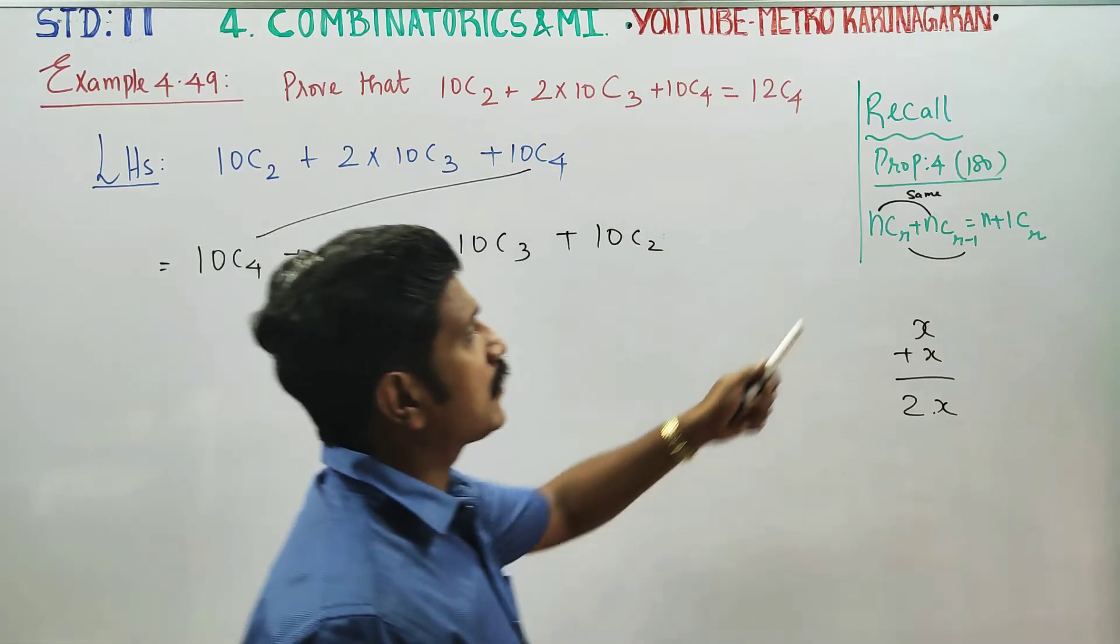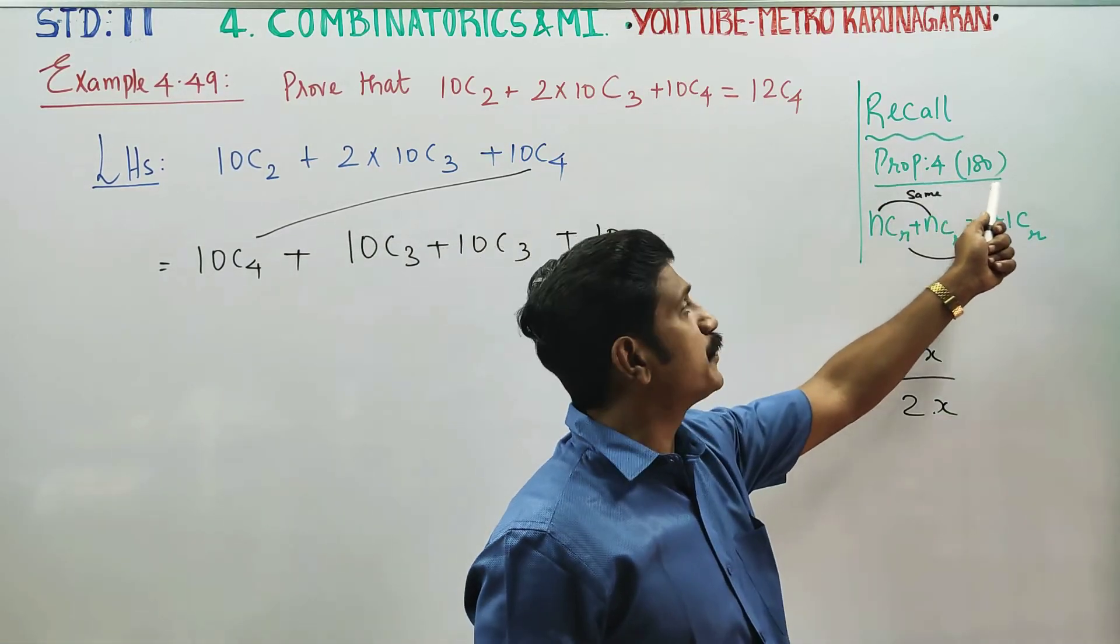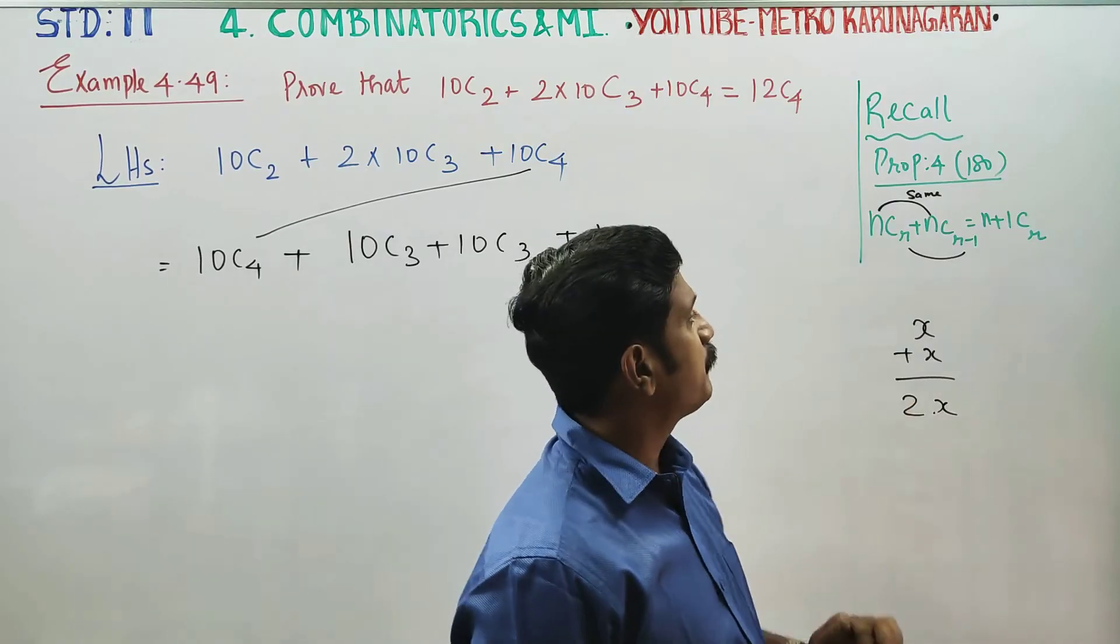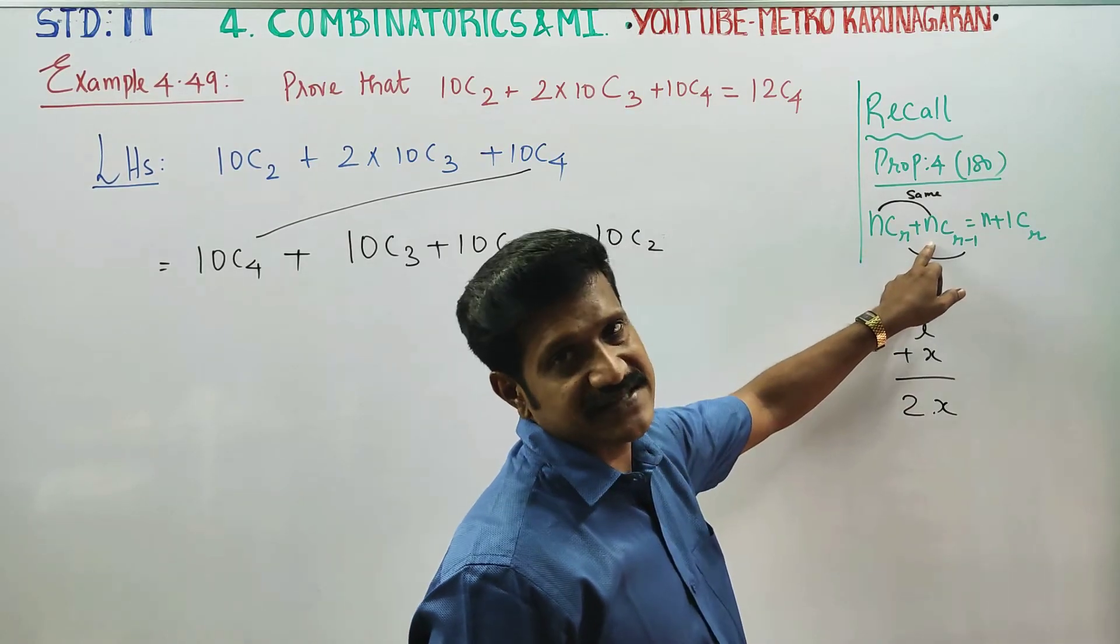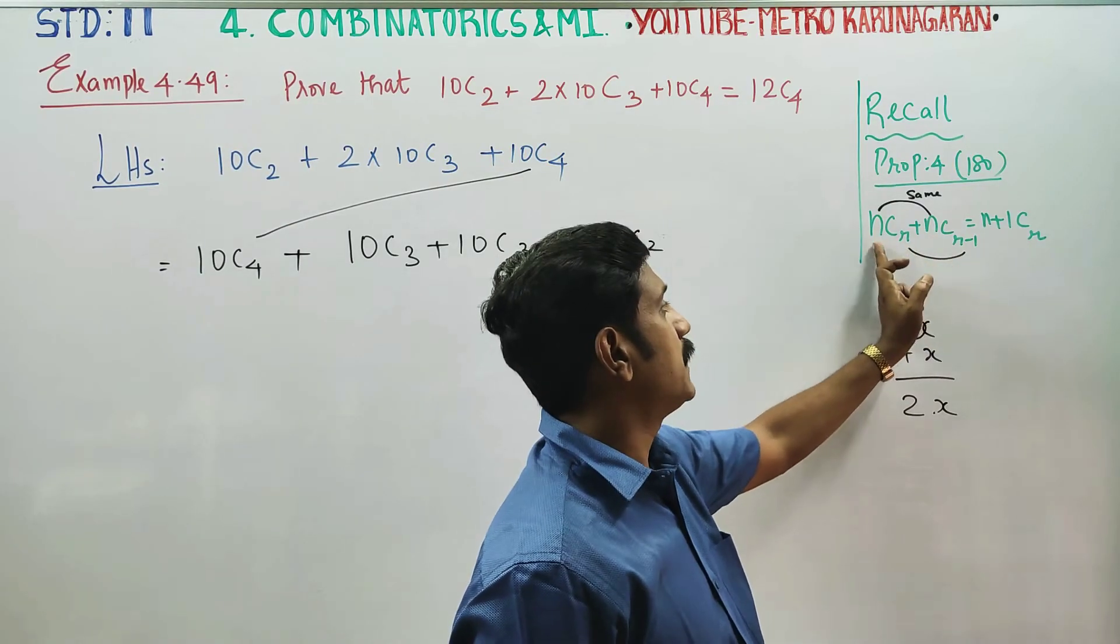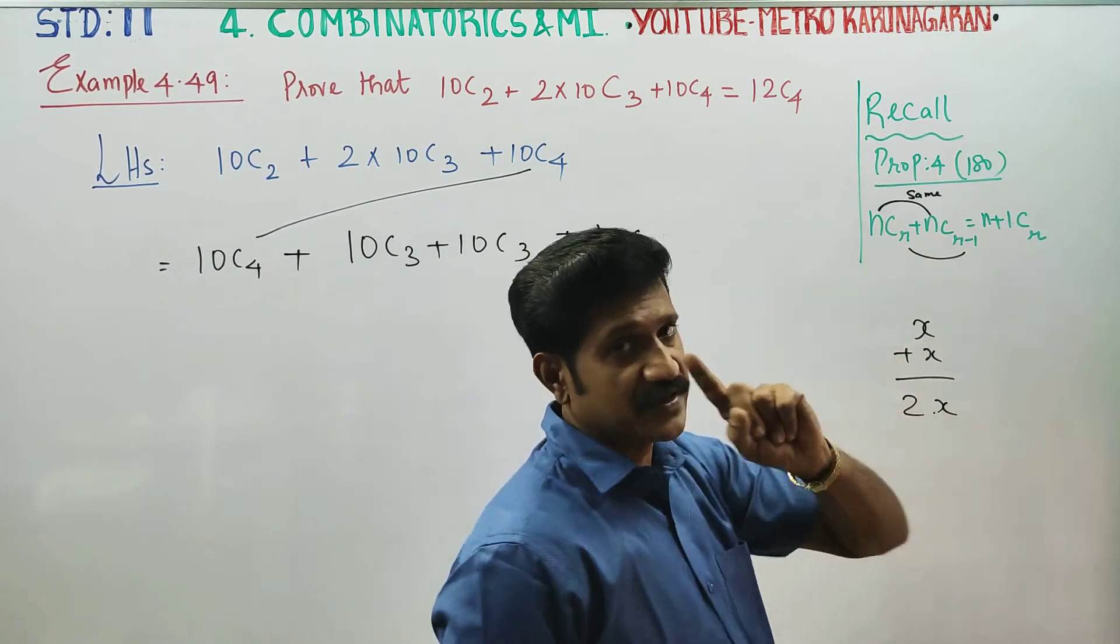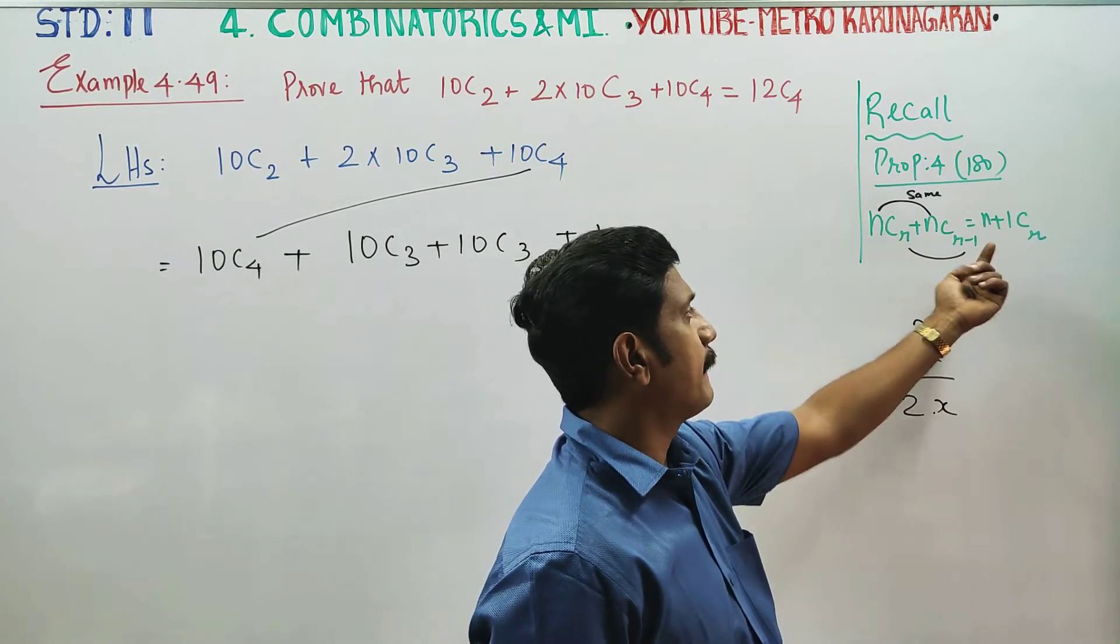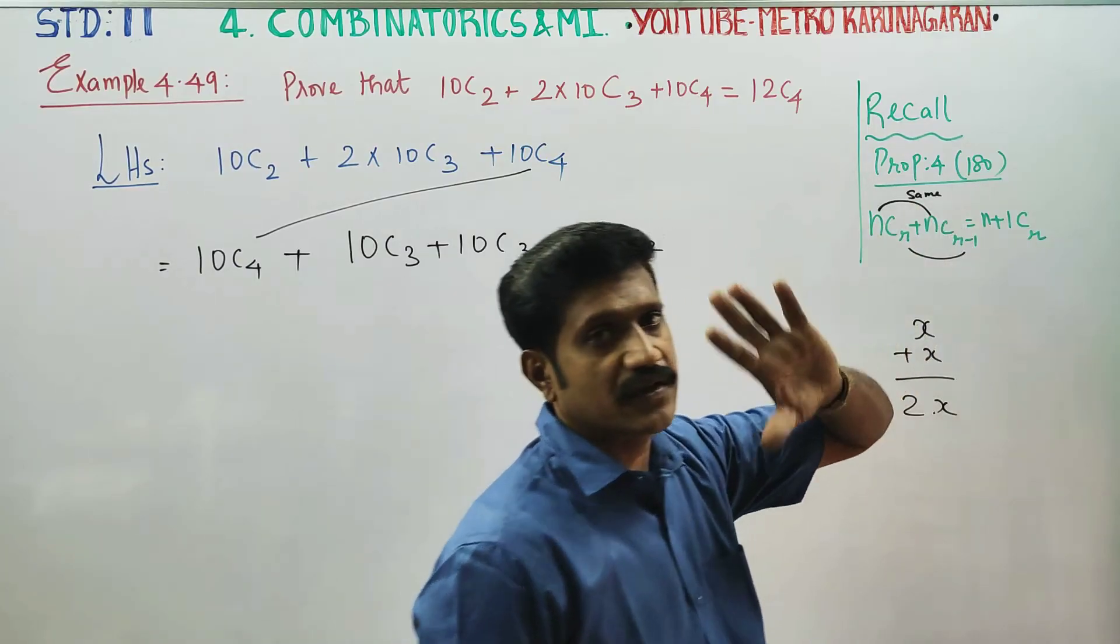Plus, I have to recall a famous property number 4 from page 180. This property states: if you have the same number with difference one, you can get n plus one as the biggest number.